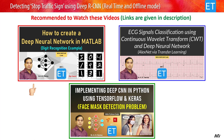The link to that first video is in the description. The second video is about ECG signal classification using wavelet features and deep neural network in MATLAB, where I used AlexNet — a pre-trained network via transfer learning. The third video is about implementing deep CNN in Python with TensorFlow and Keras, where I tackled the face mask detection problem.